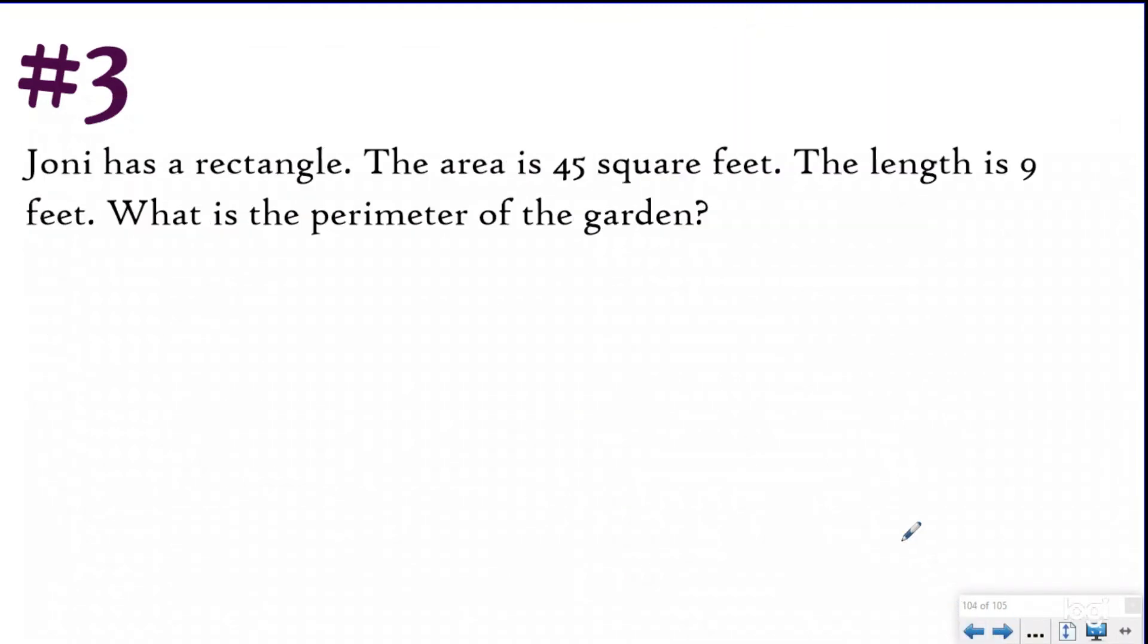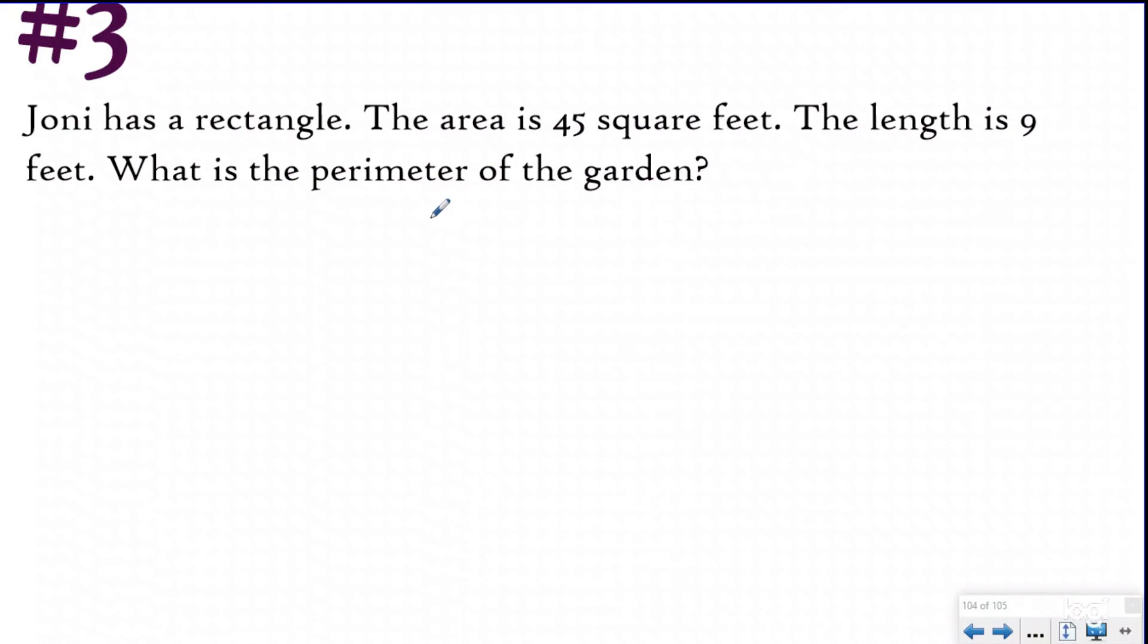Let's take a look at our most challenging question. Joni has a rectangle. The area is 45 square feet. The length is nine feet. What is the perimeter of her garden? So this is kind of a combination of two different skills we worked on. We didn't really have a lesson about this exact question. We had a lesson about finding our missing dimension and we had lessons relating area and perimeter together. But for our most challenging question, you have to mix those two lessons together and apply in a new way.